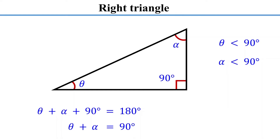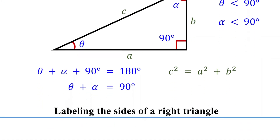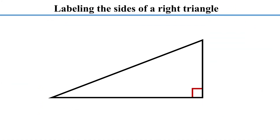Additionally, the Pythagorean theorem states that the square of the length of the longest side equals the sum of the squares of the lengths of the other two sides. Please keep these fundamental properties in mind as we progress. In a right triangle, we label the sides as the hypotenuse, opposite, and adjacent.